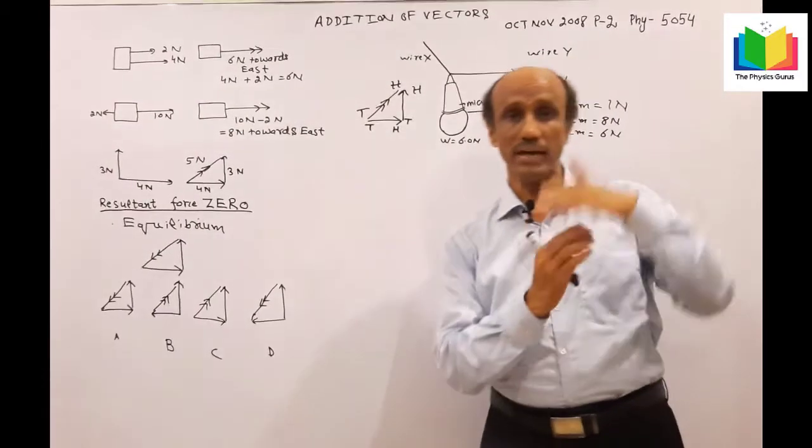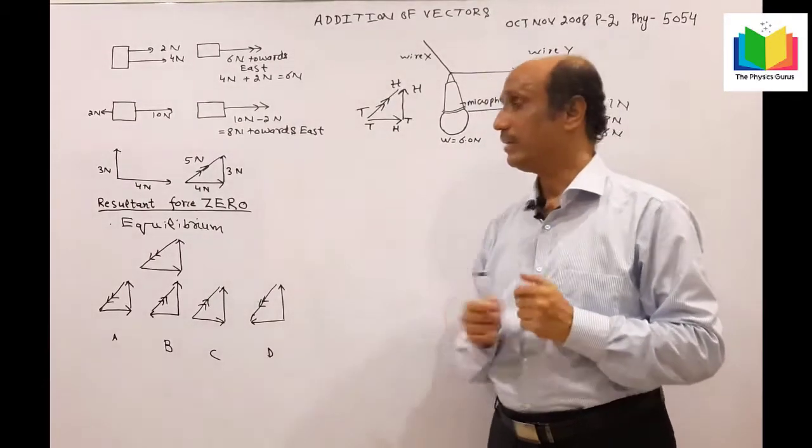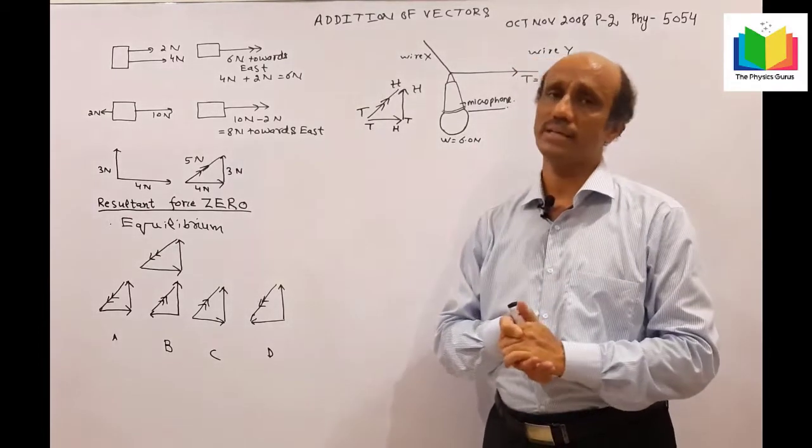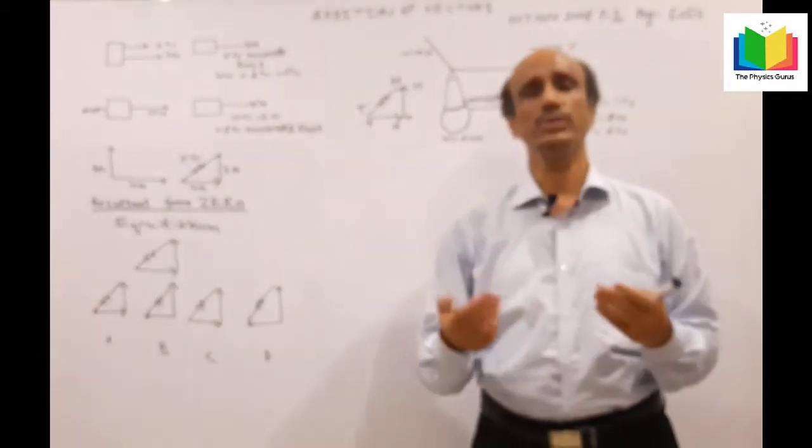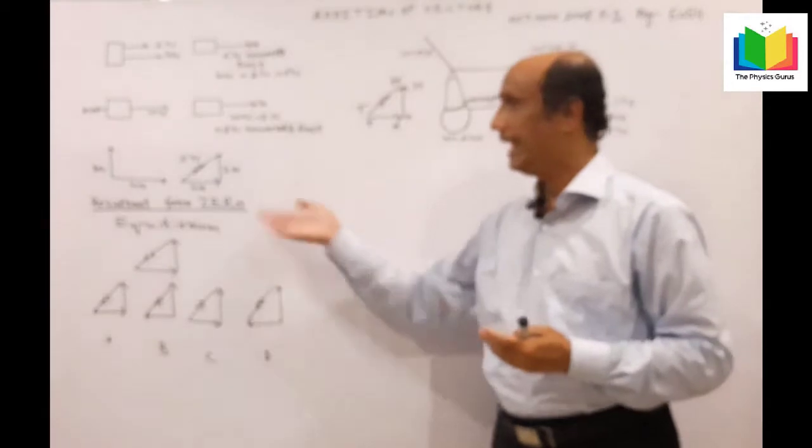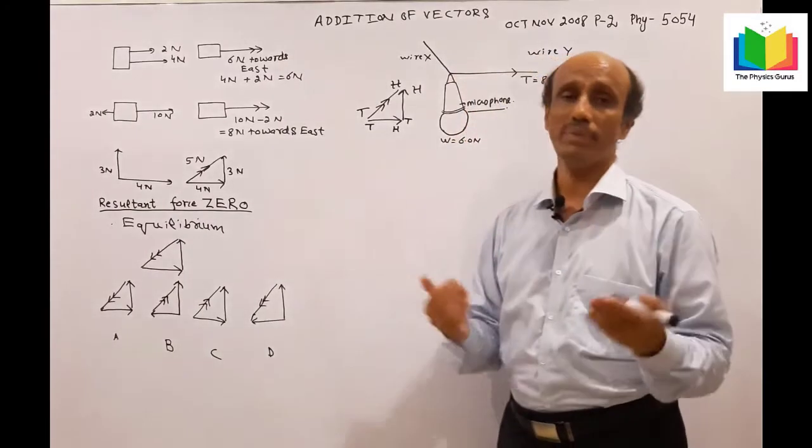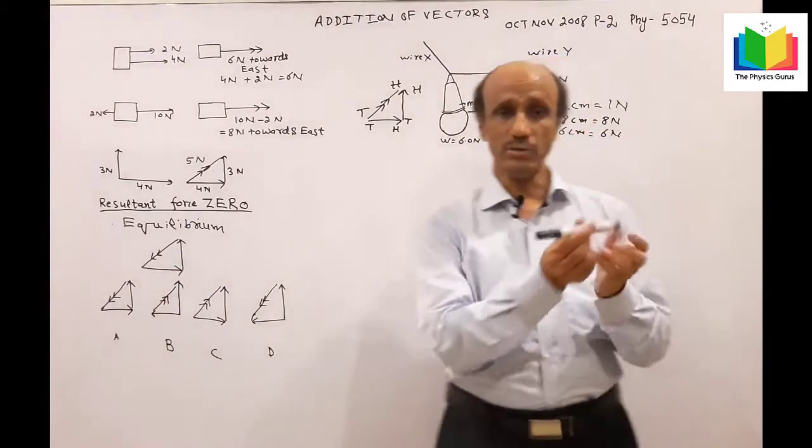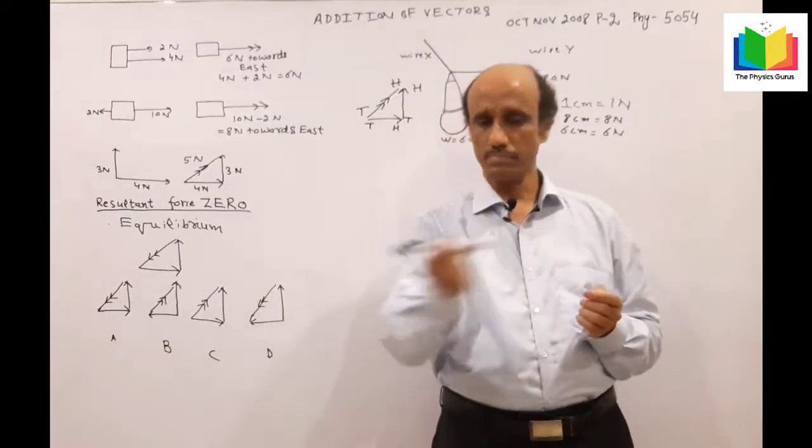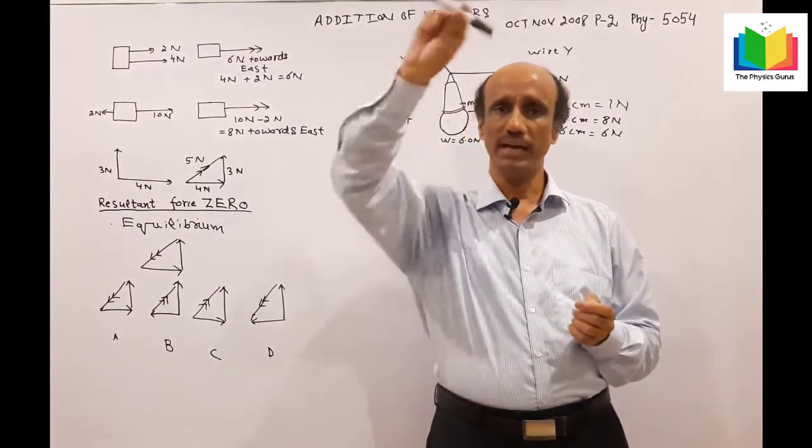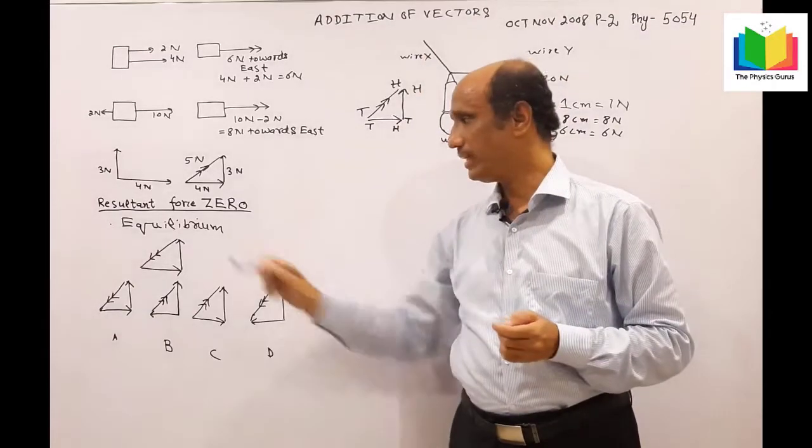If the forces are perpendicular to each other, then you can find the answer in MCQs by using the Pythagoras theorem. When the system is in equilibrium, the shape of the diagram will be a closed triangle with arrow signs going up and down.